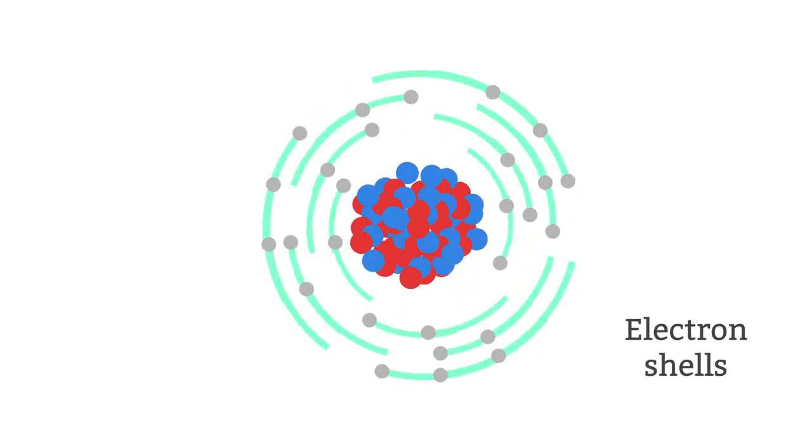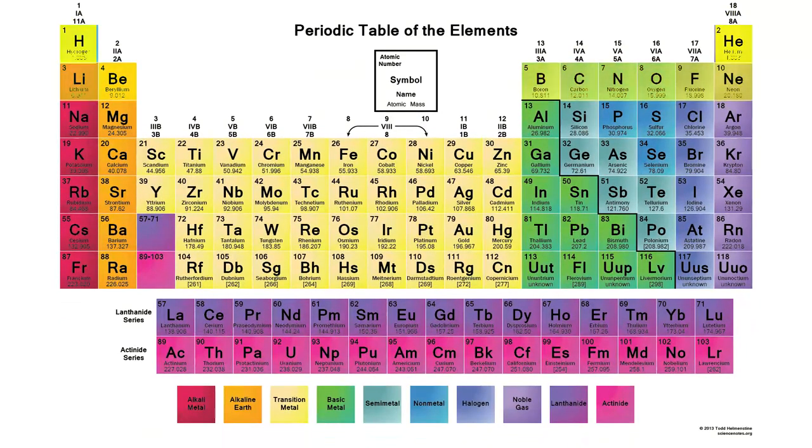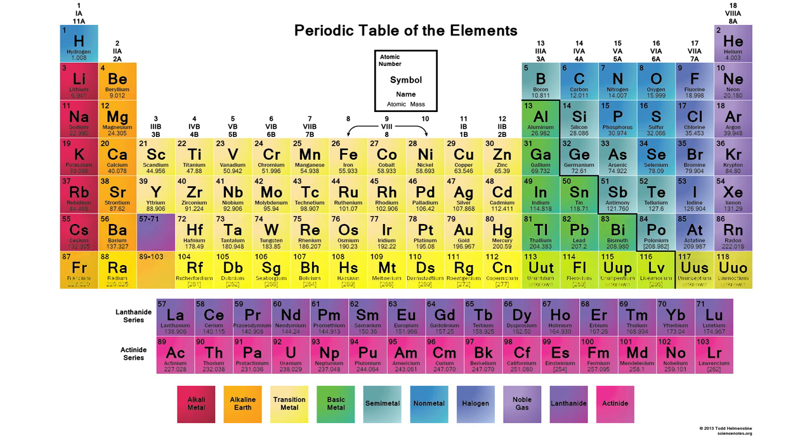We call these electron shells and draw them as concentric circles. Working outwards from the nucleus, the number of electrons each shell can take can be seen by looking at the rows of the periodic table.